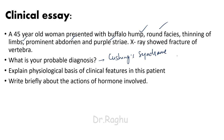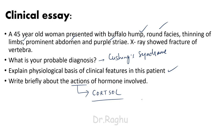The next part of the question asks to explain the physiological basis of the clinical features in this patient, and to write briefly about the actions of the hormone involved. The hormone involved is cortisol. I have already discussed the actions of cortisol, along with its regulation and circadian rhythm, in my previous video — go check that out first. In this video I will focus on the physiological basis of the clinical features in Cushing's syndrome.